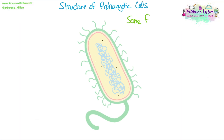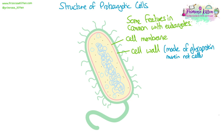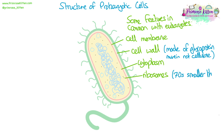The structure of prokaryotic cells. There are some features that these cells have in common with eukaryotic cells: the cell membrane and the cell wall. In the case of the cell wall, although they have the same structure, it's made of a different material — it's made of a glycoprotein called murein, not cellulose. They also share the cytoplasm and the ribosomes, which are 70S ribosomes — smaller than the eukaryotic ones.